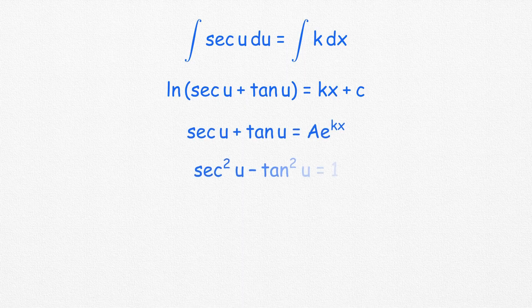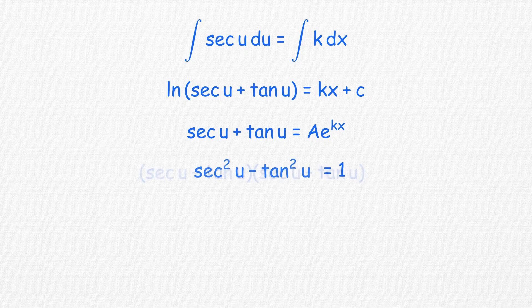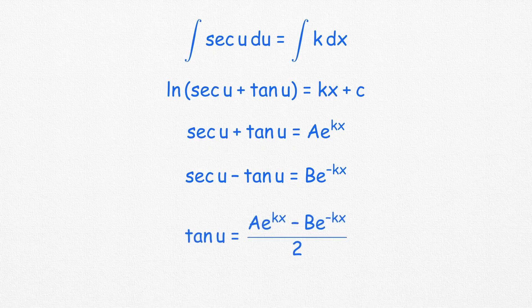Now, using the identity sec²u minus tan²u equals 1, we can also express sec u minus tan u. Subtracting these two expressions isolates tan u, which is simply y'.